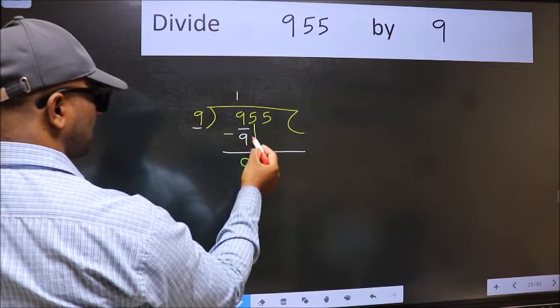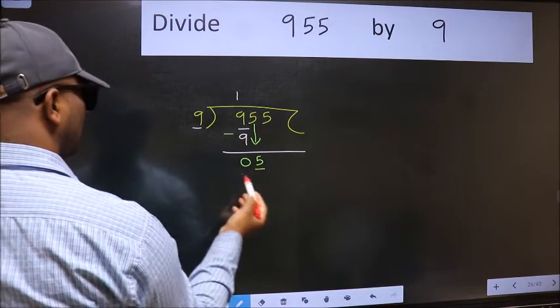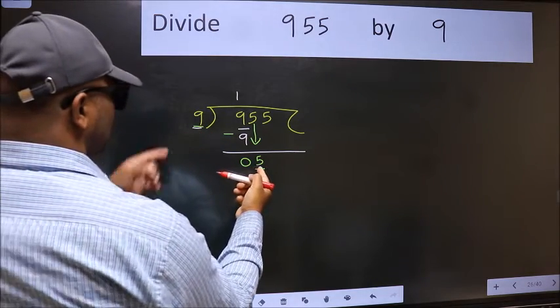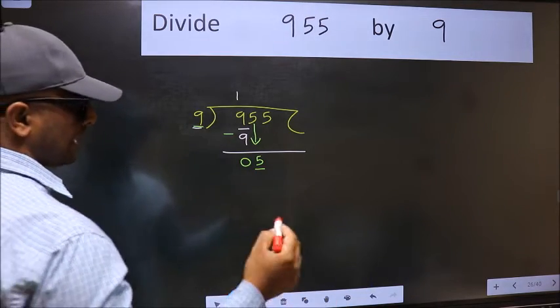After this, bring down the beside number. So 5 down. Now here we have 5 and here 9. 5 is smaller than 9, so we should bring down the second number.